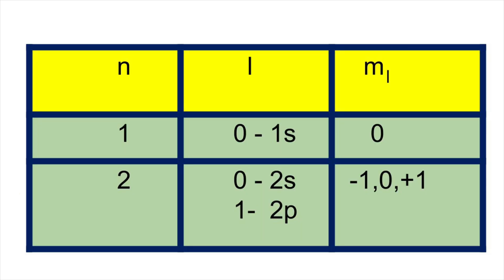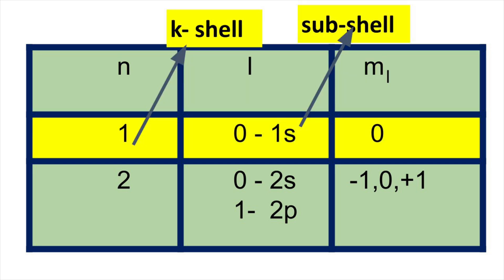According to quantum mechanics, orbitals are characterized by n, l, and ml values. Here n represents the principal quantum number. A set of orbitals having the same principal quantum number n are called shells.